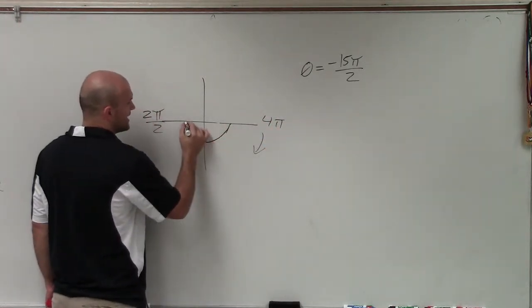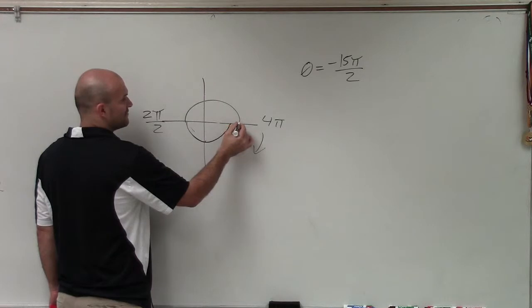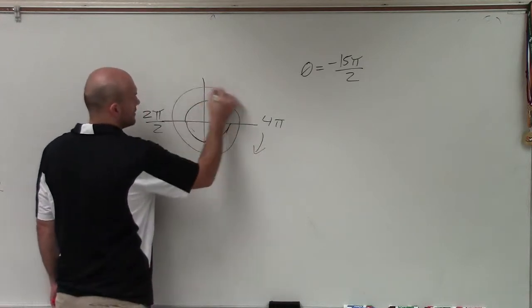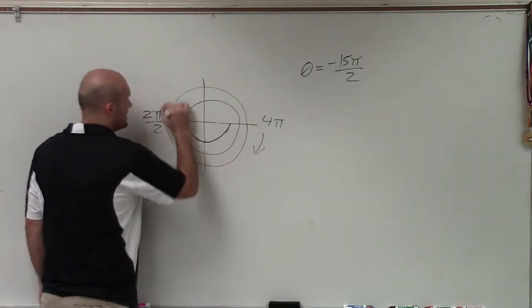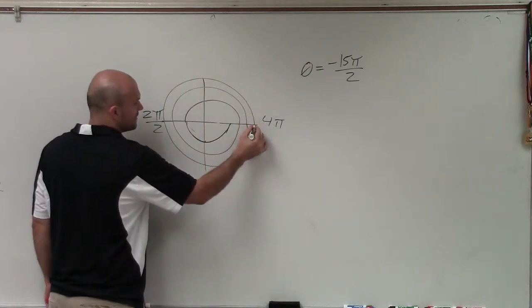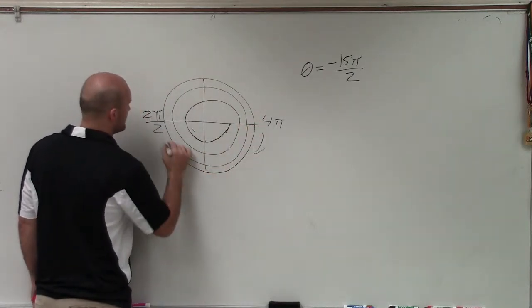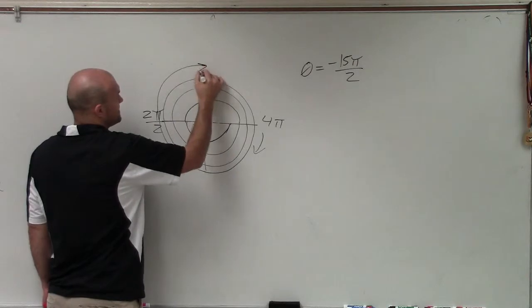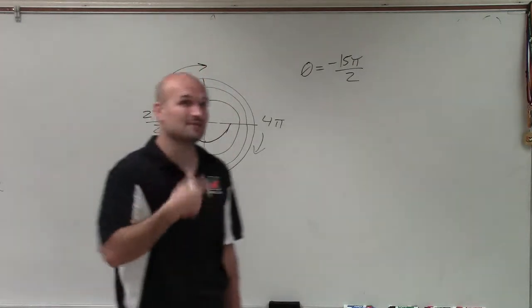So if my angle is going in the negative direction, that's negative 4 pi. Here would be negative 8 pi. Here would be negative 12 pi. Then I go 13 pi, 14 pi, 15 pi. You can see all these definite revolutions.